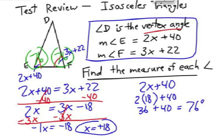What would the vertex angle be? That's right. All three angles add up to 180. So we subtract 180 minus 76 minus 76 and we get 28 degrees. The three angles are 76, 76 and 28.